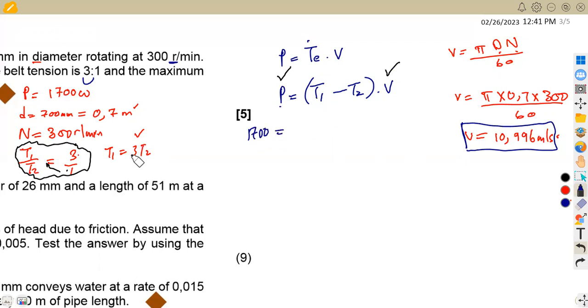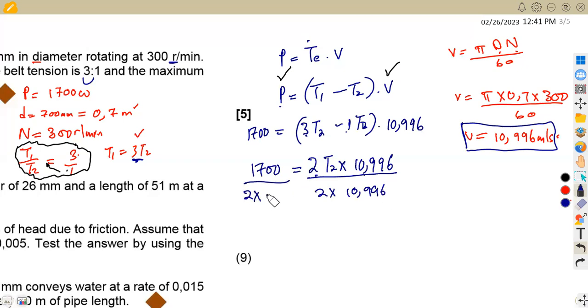So we can substitute this information that we have now. 1700 watts is equivalent to T1 in terms of T2, which is 3T2 minus T2 times the velocity, which we got here, which is 10.996. So that means we can calculate T2, which is going to give us T1 from this equation. This is same as 1 here, so if you subtract, it's going to be 1700 equals 3 minus 1, which is 2T2 times 10.996. So this can cancel, you remain with T2. So T2 is going to be 77.301.